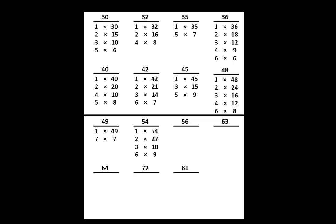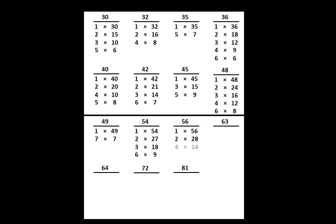Let's move to the number 56. On your paper, write that we can think of 56 as 1 times 56 or 2 times 28 or 4 times 14 or 7 times 8. Those are all the factor pairs of 56.